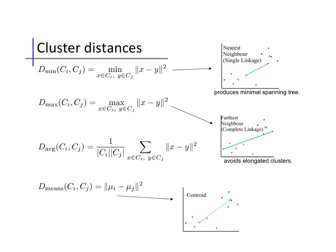Other choices include using the average distance between all pairs of points across the sets, so D_average here, or using the distance between the two clusters' centers, D_means here, where μ_i and μ_j are the centroids of cluster i and cluster j. All these choices result in slightly different clusterings with different behaviors and resulting clusters.